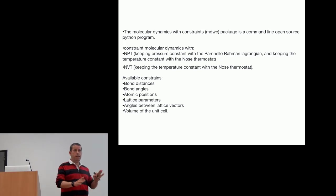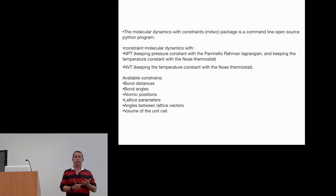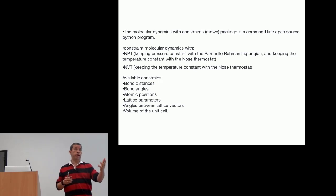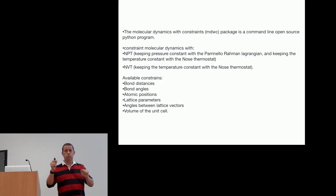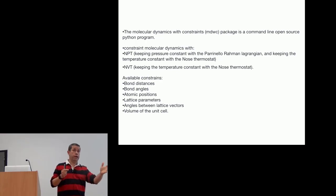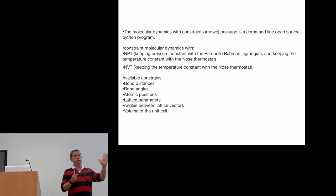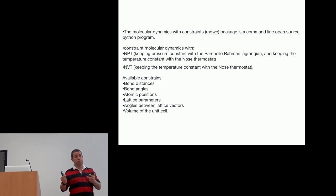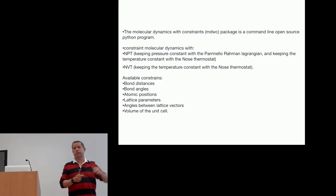The package can be used in two different methods. We have a Python interface that will open Abinit as a calculator, in the same way that ASE does. You run the molecular dynamics, it passes the coordinates to Abinit, Abinit does the calculation, and you obtain the forces, stresses, and energies from Abinit. Then you use the molecular dynamics to move the ions as many times as you want.